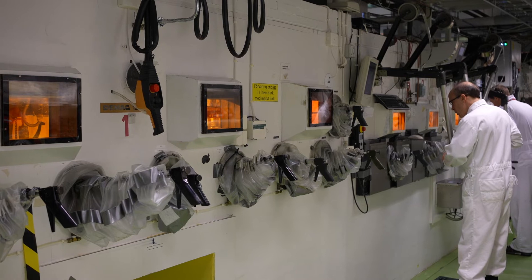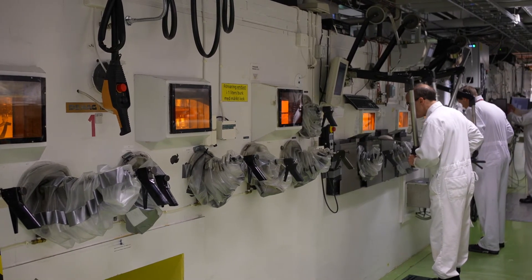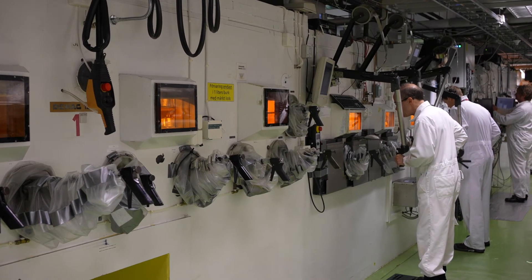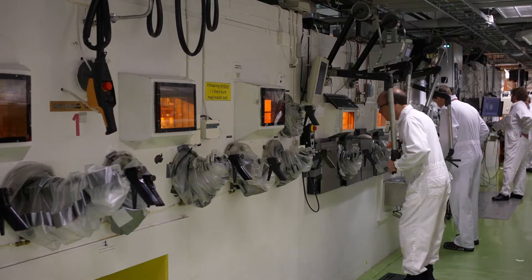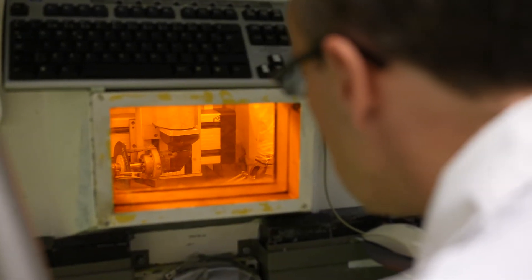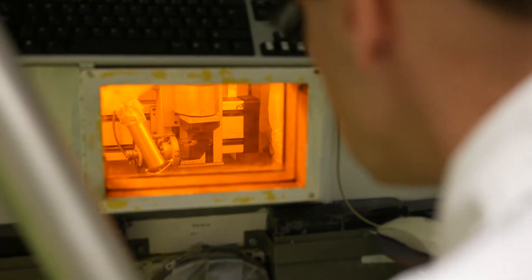The linked hot cells contain facilities for grinding and polishing metallographic samples. Two optical microscopes for imaging and dimensional checks, and an inspection camera for documentation are available. Micro-hardness measurements through a micro-hardness indenter can be performed in the linked hot cells.